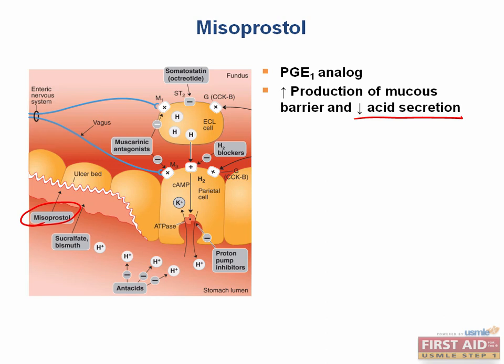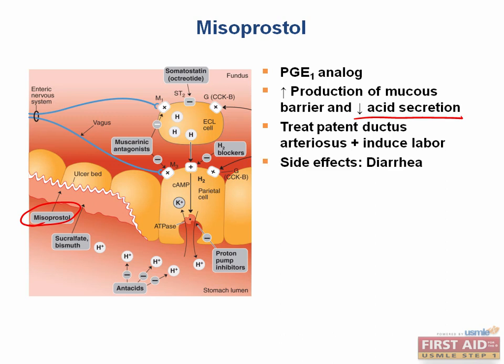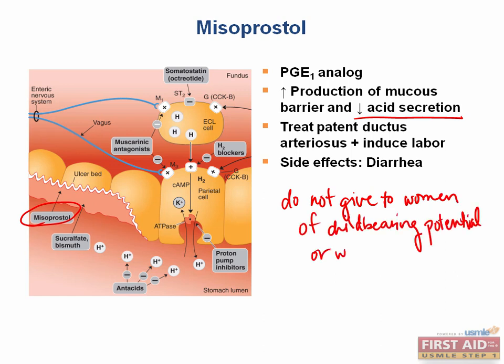Separately, this same drug is also used in the case of a patent ductus arteriosus, because the prostaglandin keeps the PDA open. It can be used to induce labor as it causes uterine contractions and thinning of the cervix. The major side effect is diarrhea, and it is also contraindicated in women who might be pregnant or might become pregnant because it is an abortifacient.